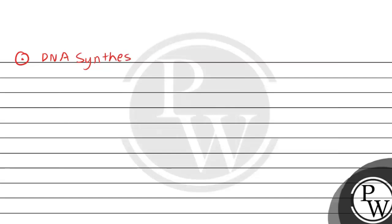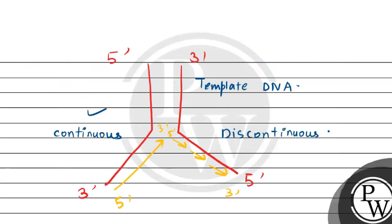DNA synthesis - DNA polymerase action. DNA polymerase enzyme, example DNA polymerase 3 in prokaryotes, adds nucleotides at the 3' end and synthesizes new DNA strand from 5' to 3'. DNA polymerase works continuously on the leading strand and discontinuously on the lagging strand.